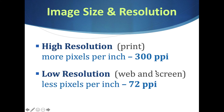A simple guideline: for print you typically need 300 pixels per inch for a high quality image. For web, screen, and everything else, 72 pixels per inch is fine — your eye won't notice a difference. If you're working in print — brochures, mailers — those images will be 300 pixels per inch when working on them.